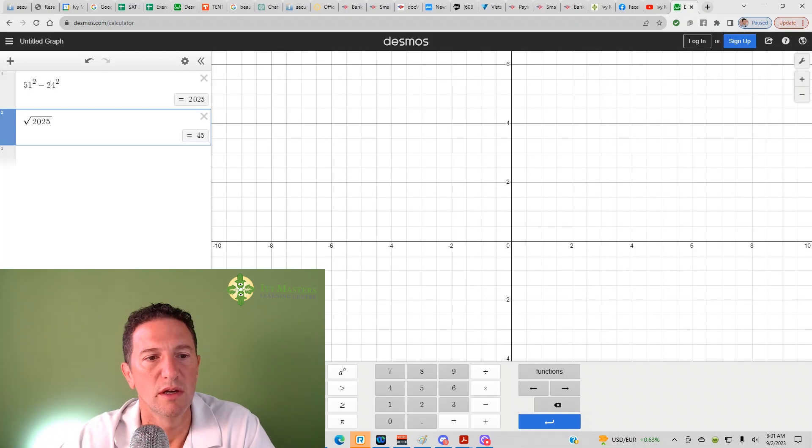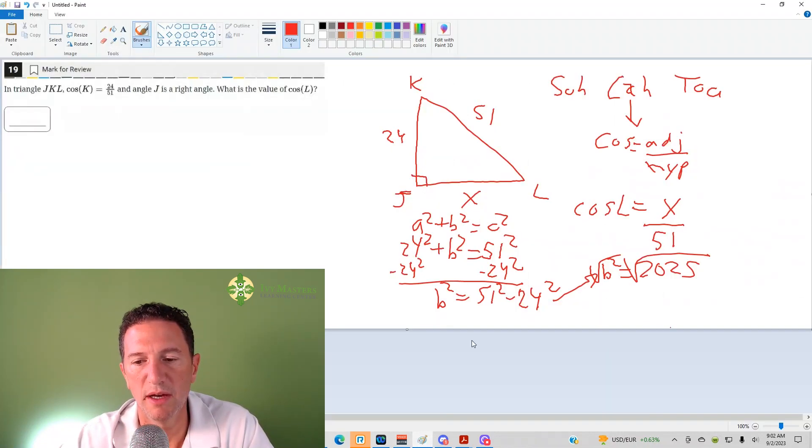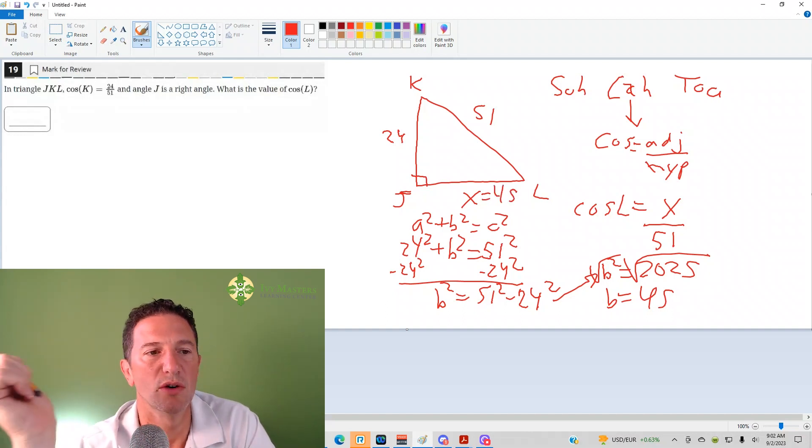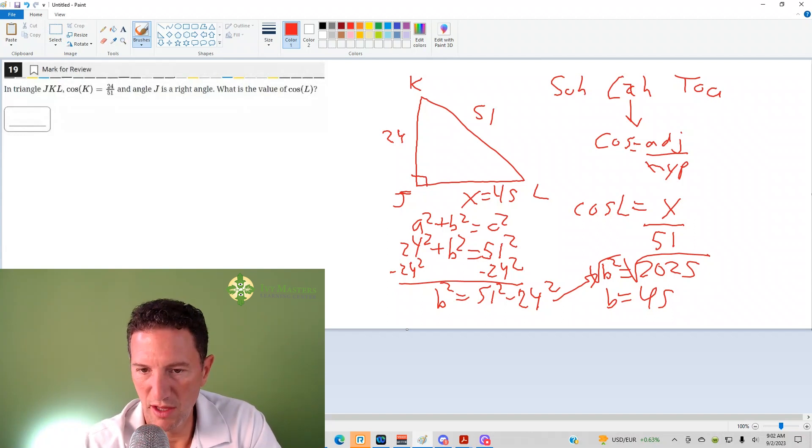45. And there you go. It's 45. Okay. So let's go back to our thing. So in this case, B equals 45. So X is 45. So what is the cosine of L? The cosine of L is adjacent, which is 45. It's the side next to, but not the hypotenuse over hypotenuse. What is hypotenuse? It's 51.